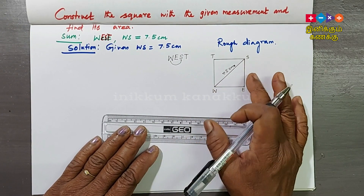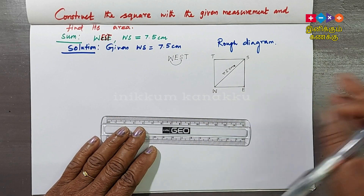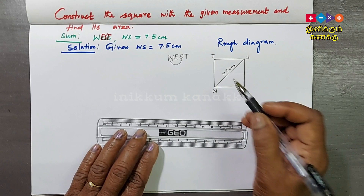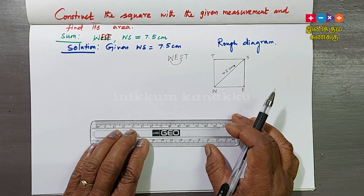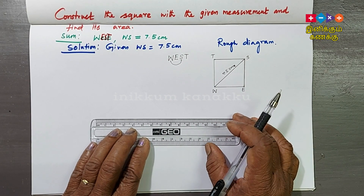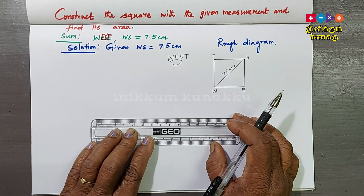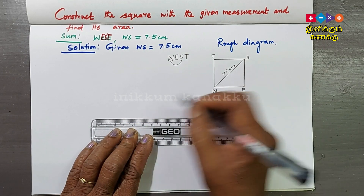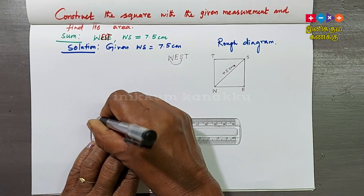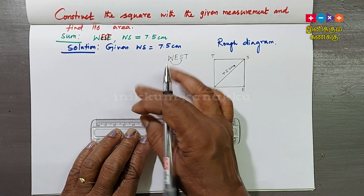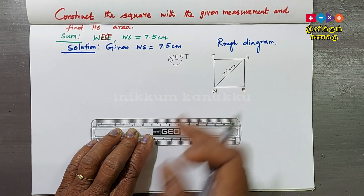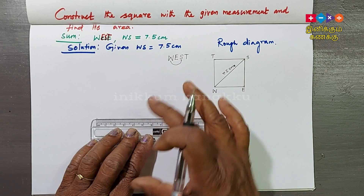Another way to apply: construct the square. The diagonal is 1.5 centimeters. More line segment — 7.5. The central line: the mother diagonal cut, and the mother diagonal.